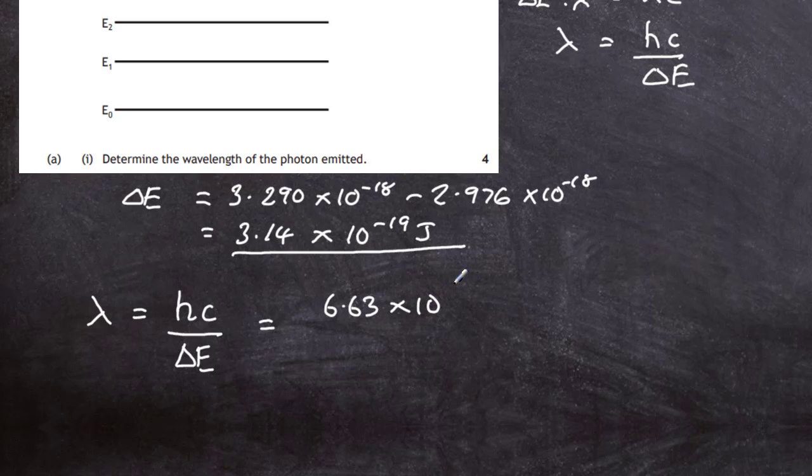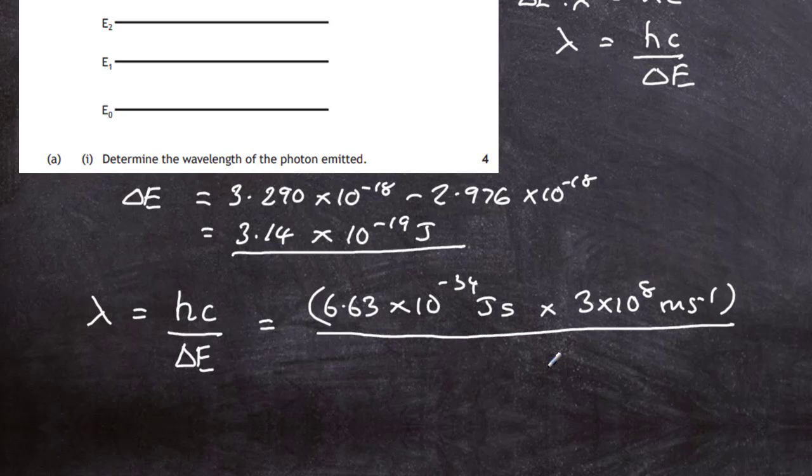Multiplied by the speed of light, 3 times 10 to the power of 8 meters per second. Put a bracket around that and we're dividing by the energy gap which we just worked out, the energy difference between the two energy levels, which was 3.14 times 10 to the minus 19 joules.